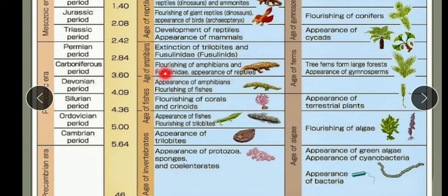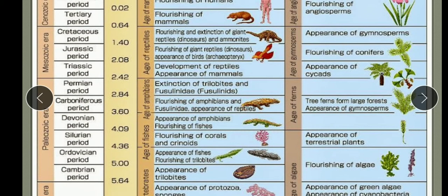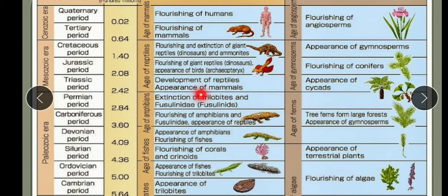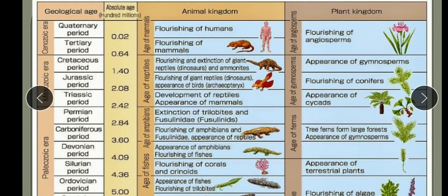In the Carboniferous period, amphibians flourished and fishes were also present. This was the period when reptiles appeared. Tree ferns — pteridophytes — formed large forests, and the appearance of gymnosperms was also noticed in this period. In the Permian period, trilobites became extinct, primitive reptiles appeared, and the decline of primitive ferns occurred — the ferns that developed in the Carboniferous period were no longer present.